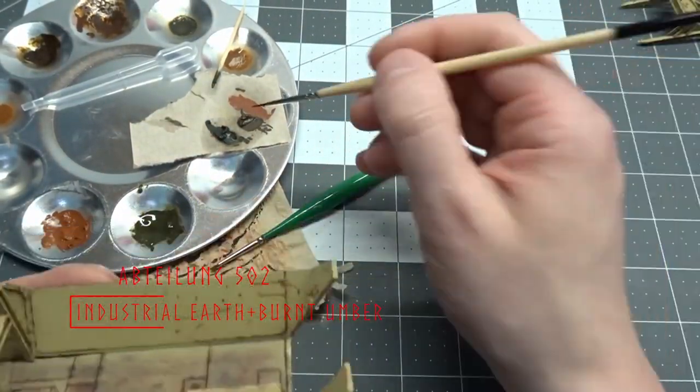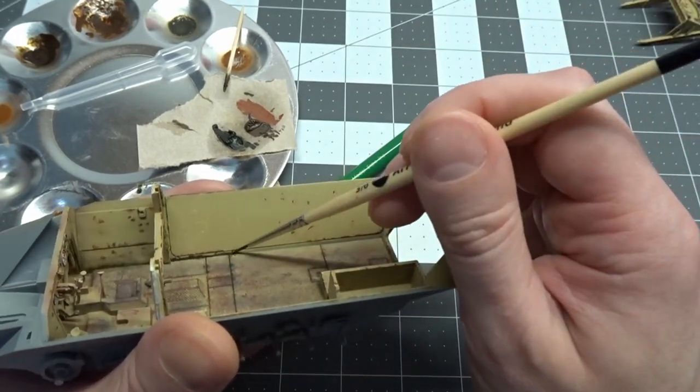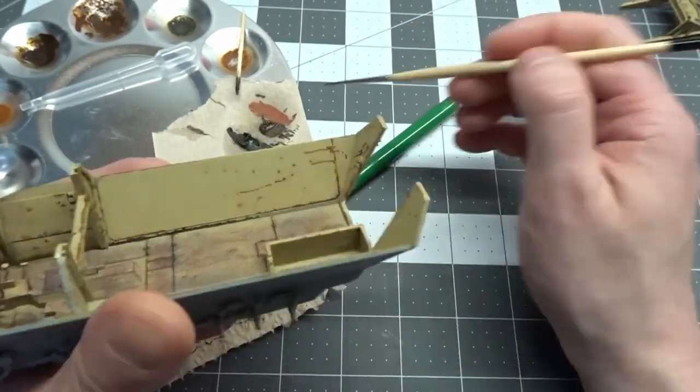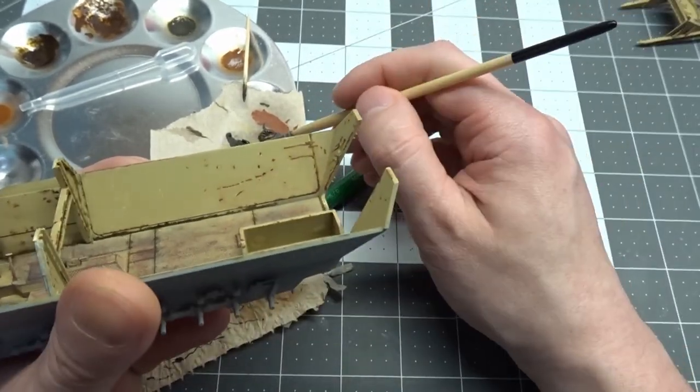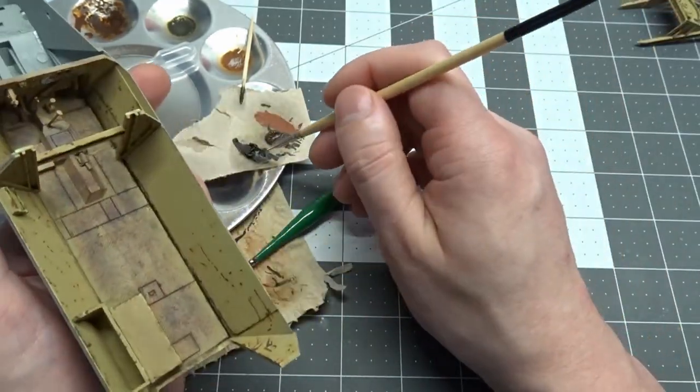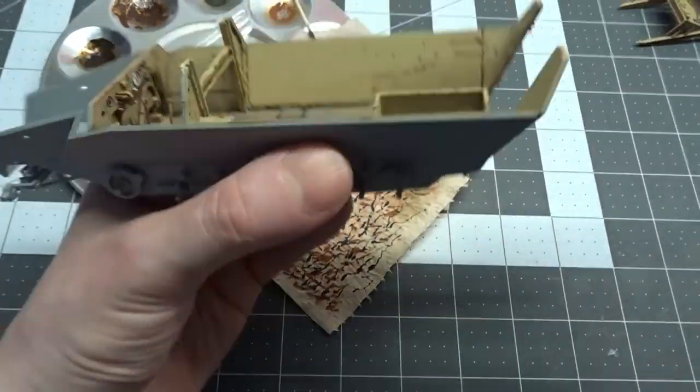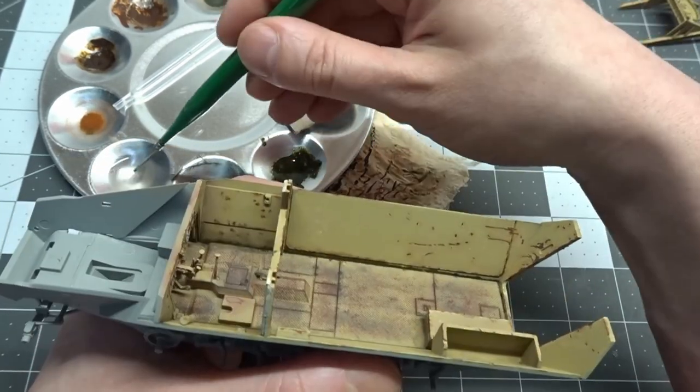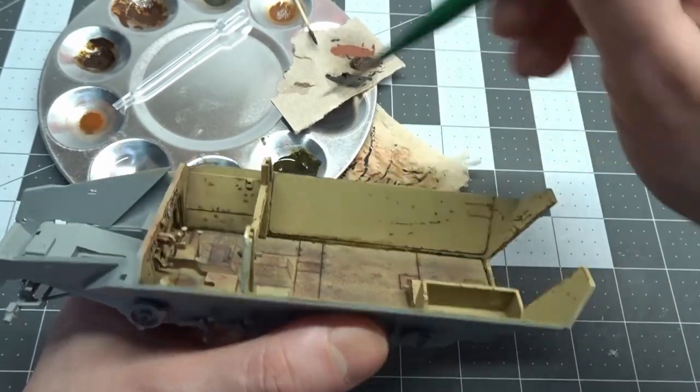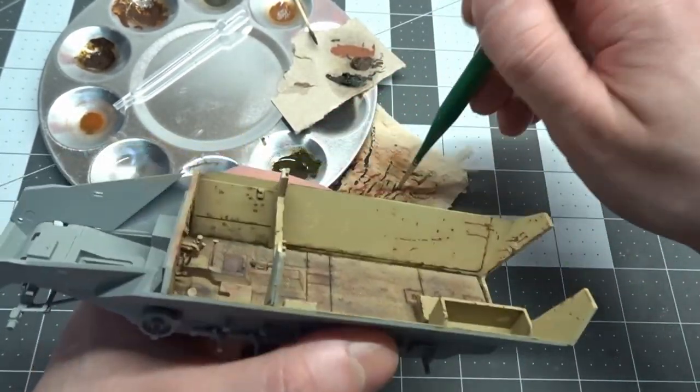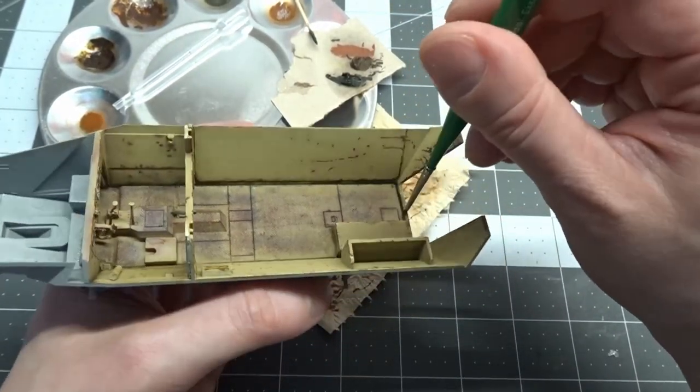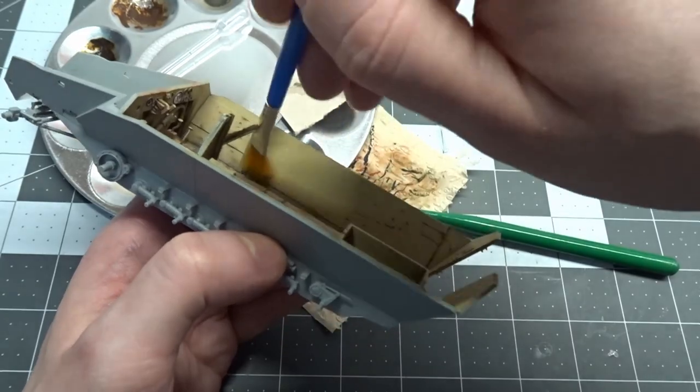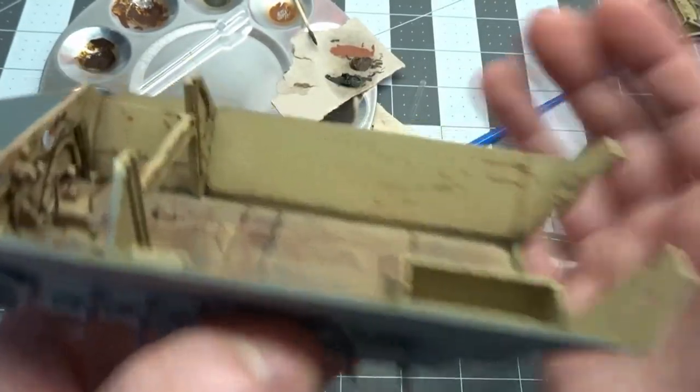Now to add some filth and grime to the fighting compartment using industrial earth and burnt umber. I brush this into the corners and recesses. I keep alternating between these two colors. I then use an old brush moistened with odorless thinner and blend these together, and then once over with a completely dry brush. And here is the result.